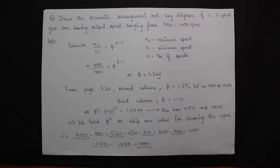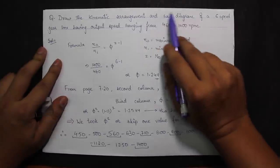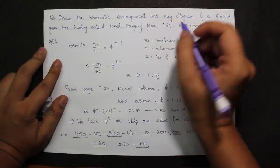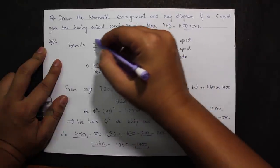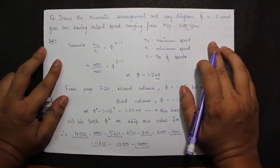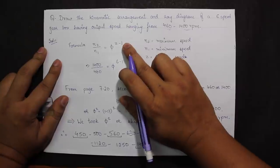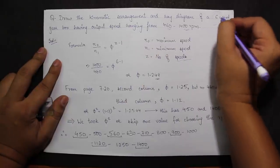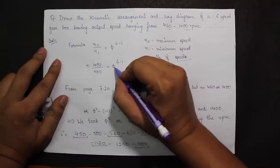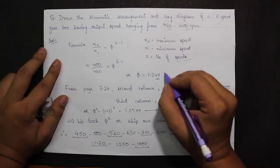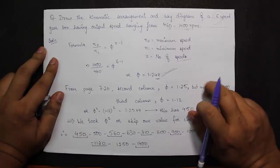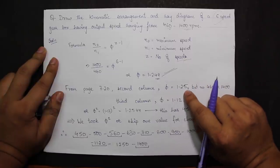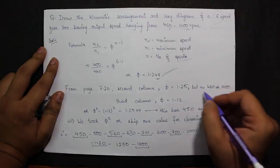The first question in this set is: draw the kinematic arrangement and ray diagram of a 6-speed gearbox with output speeds ranging from 460 to 1400 rpm. Using the formula, 1400/460 = φ^(6−1), giving φ = 1.249. Going to page 7.20, the closest value is φ = 1.25 in column 2, but column 2 does not contain 460 or 1400.